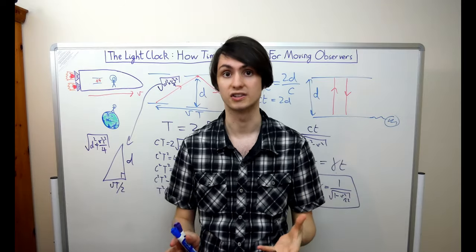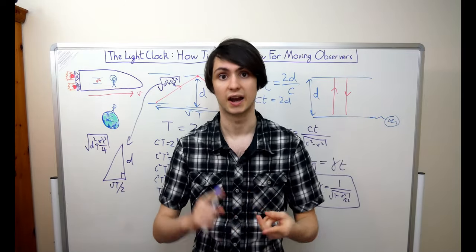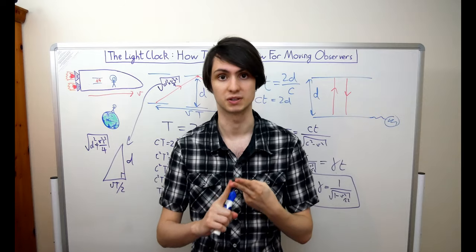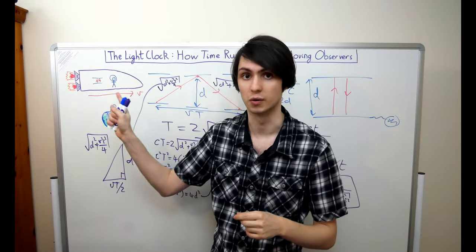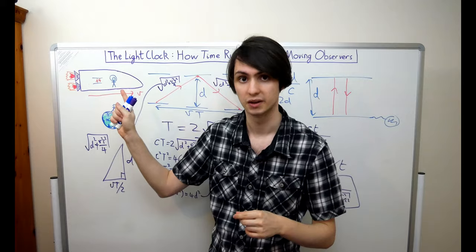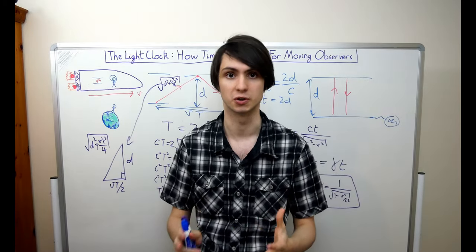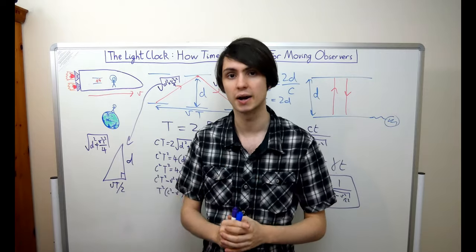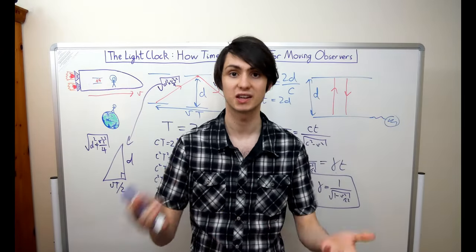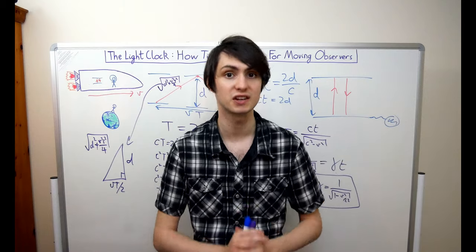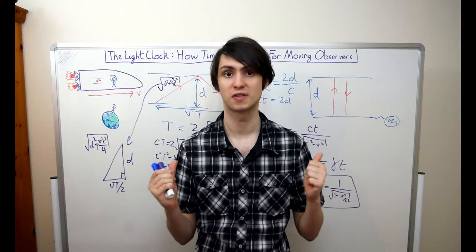The conclusion then is that if we adopt both the light postulate and the relativity principle, then if the person on earth sees the light clock running slow in the spaceship they also see everything else in the spaceship running slow too. They literally see time slow down in the moving spaceship. Thank you very much for watching and I hope you found this interesting. Please like and subscribe for more Shots in the Quark.